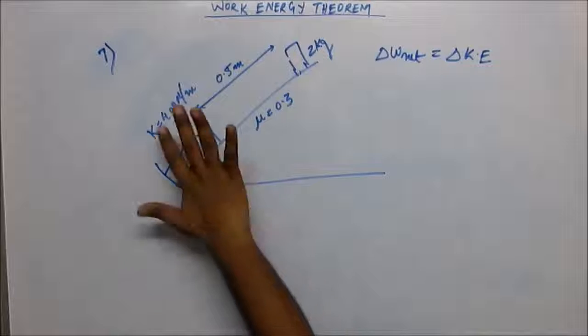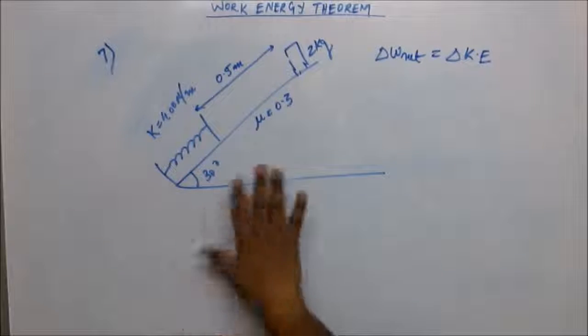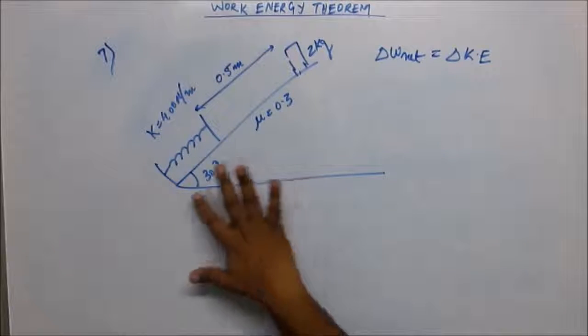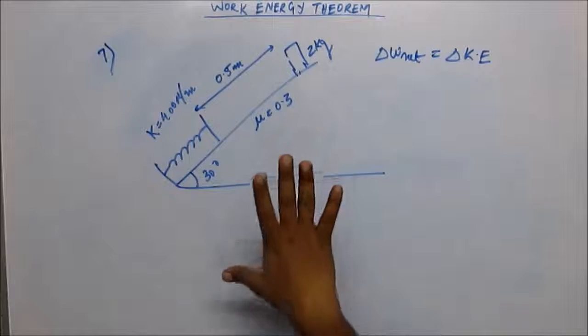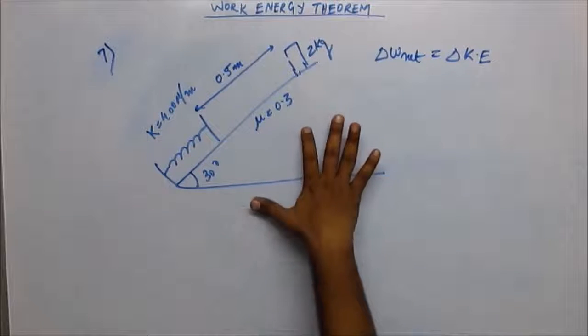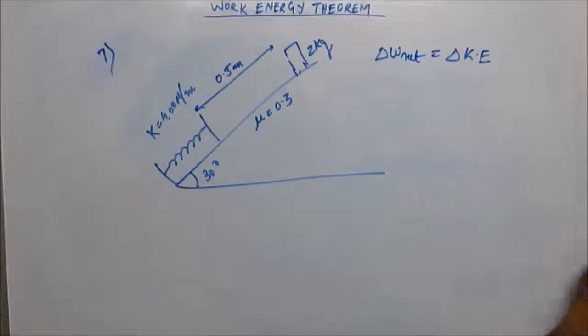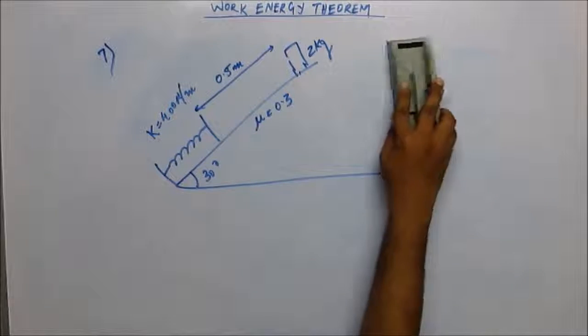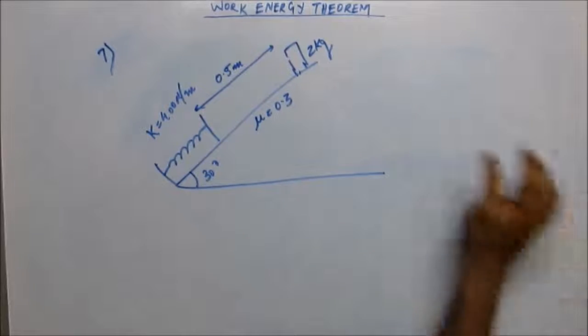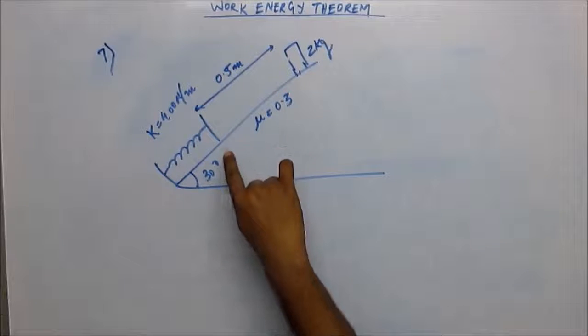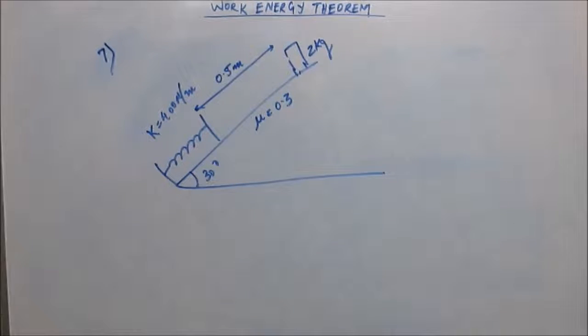We have a spring of spring constant 400 N per meter, the angle of inclination is 30 degrees. This is not a smooth surface - the coefficient of friction is 0.3, mass of the body is 2 kg, and the distance between the body and the tip of the spring is 0.5 meter.